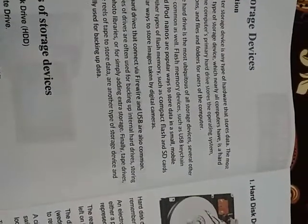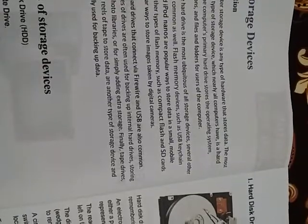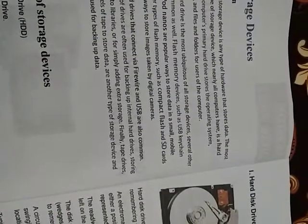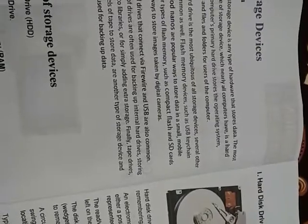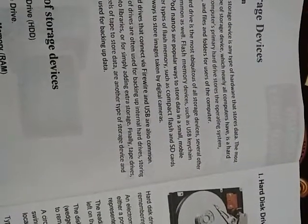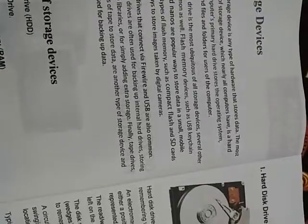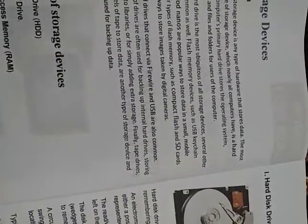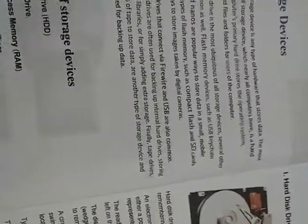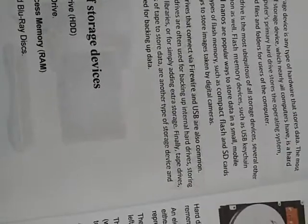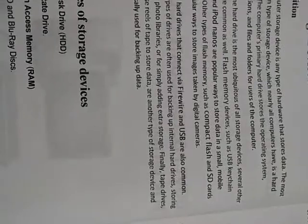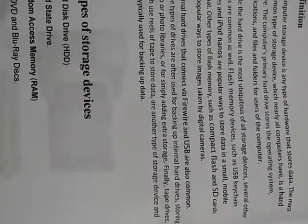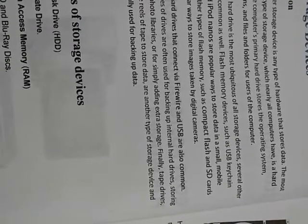Flash memory devices such as USB keychain drives and iPod Nanos are popular ways to store data in a small mobile format. Other types of flash memory such as Compact Flash and SD card are also common ways to store images taken by digital cameras.